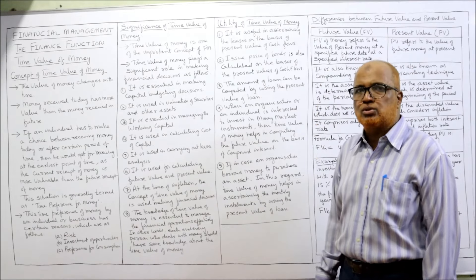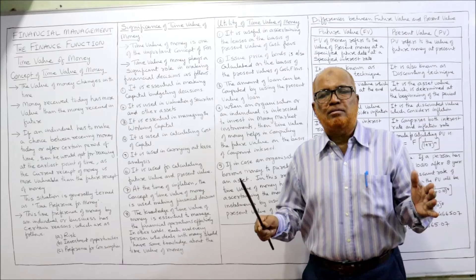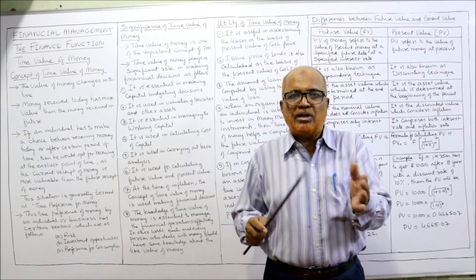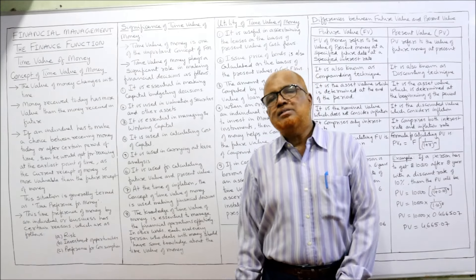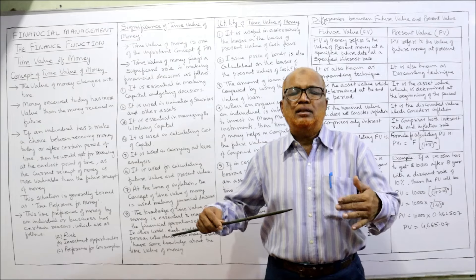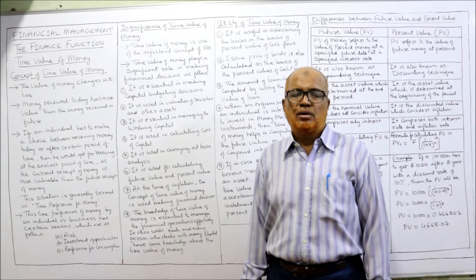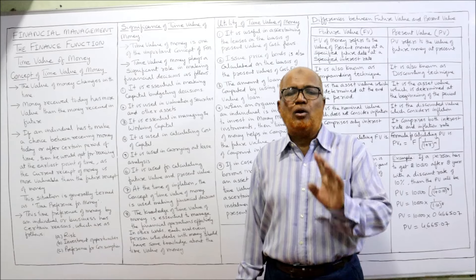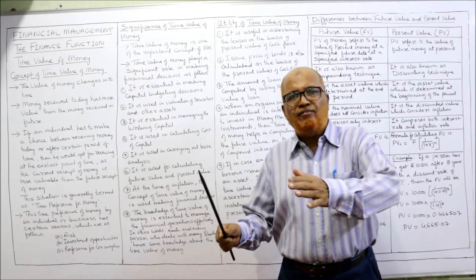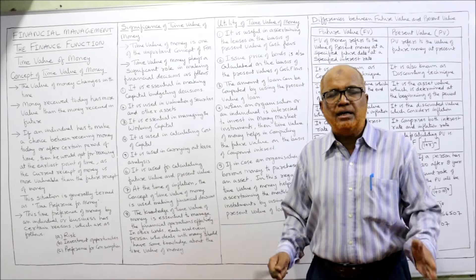First, it is essential in making capital budgeting decisions. Capital budgeting decision means deciding whether to buy a capital asset or not. Suppose there are two machines — Machine A and Machine B — and the business has to purchase one of them. To evaluate which machine should be purchased, we have to compare cash inflows and cash outflows. But the cash outflow is right now and the cash inflow we are going to get in future.